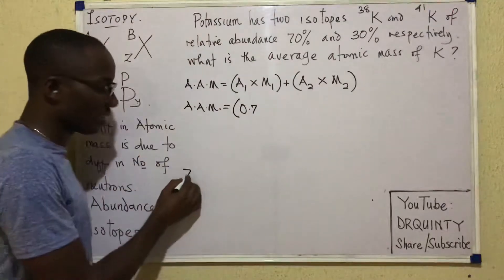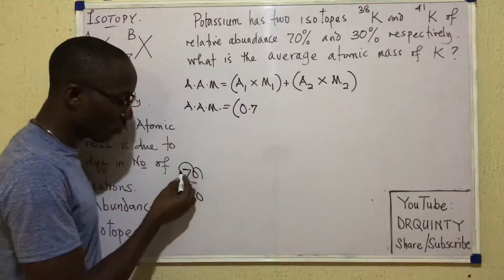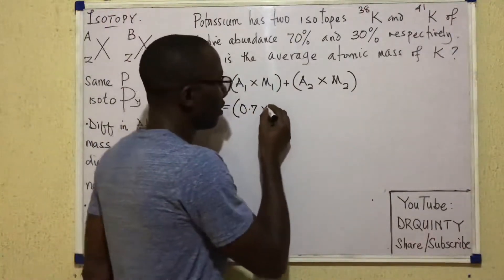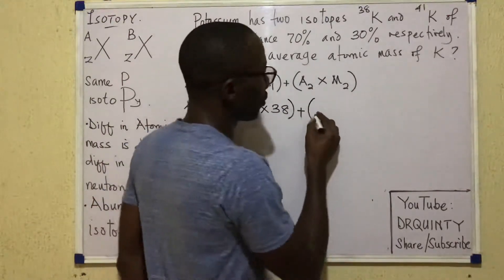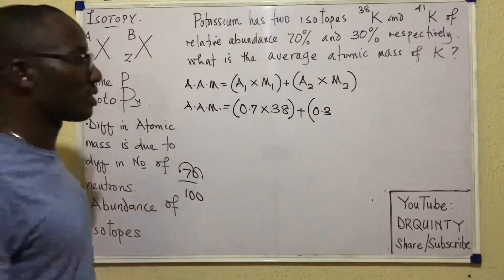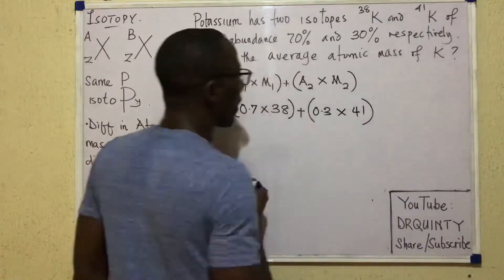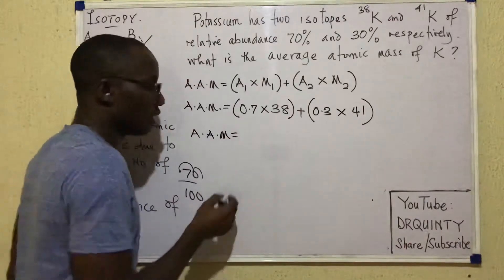So that the average atomic mass here for this element would be the abundance of the first isotope is 70%. Now you'll agree with me that 70% can be written as 0.7 to save time. It's the same thing. 70% is 70 over 100. So I can move my decimal two places backward and that's 0.7 times the number there. The first mass is 38 plus the second isotope.